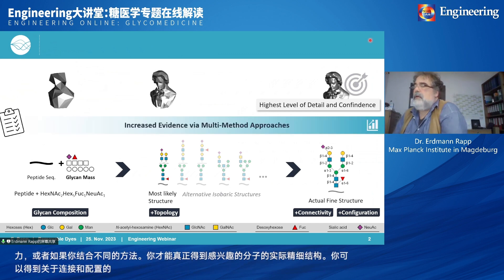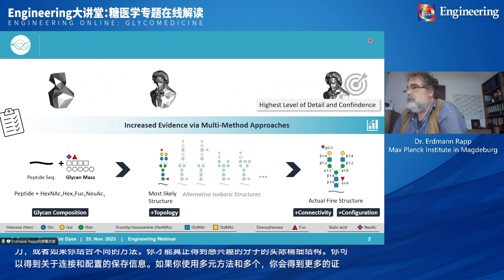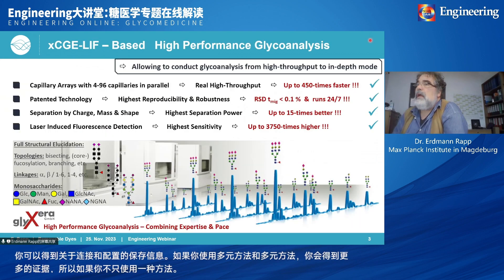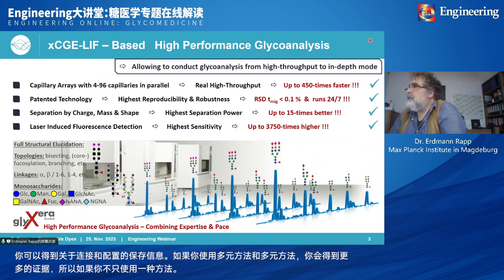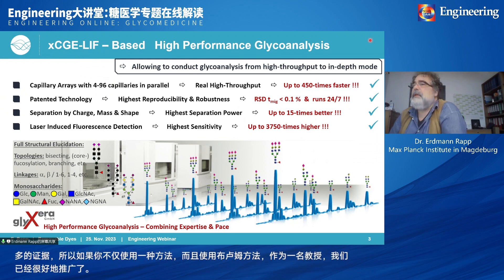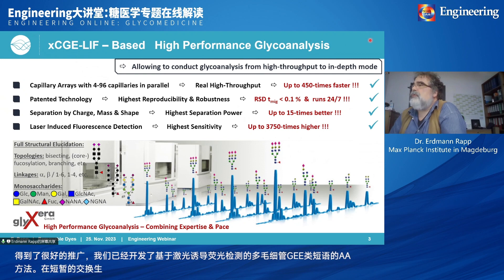You get this increased evidence if you use multi-method approaches — even just two methods together helps. We have developed a method based on multiplex capillary gel electrophoresis with laser-induced fluorescence detection, in short xCGE-LIF, and this enables us to do high-performance glycoanalysis.